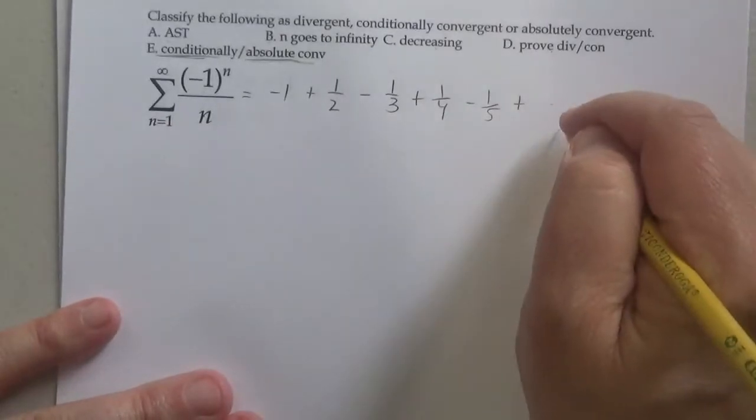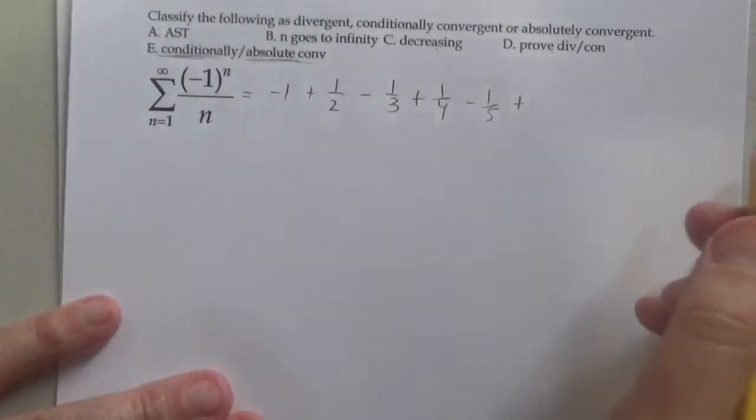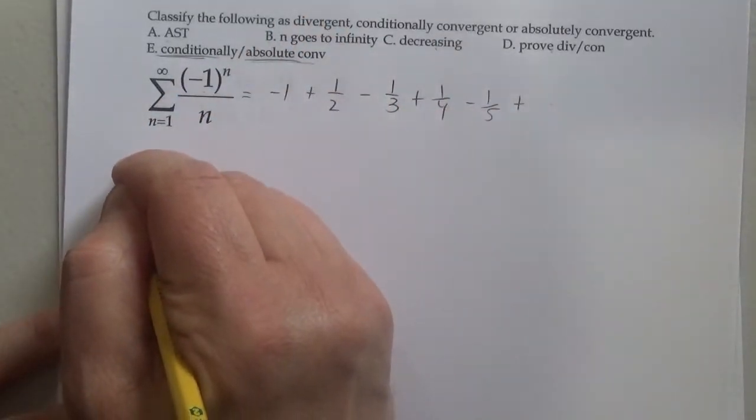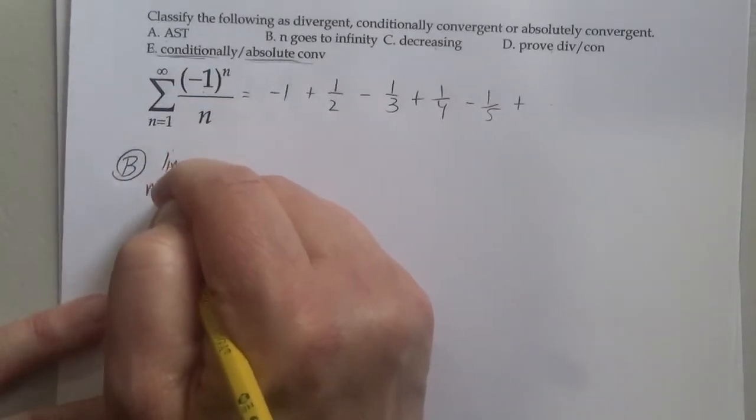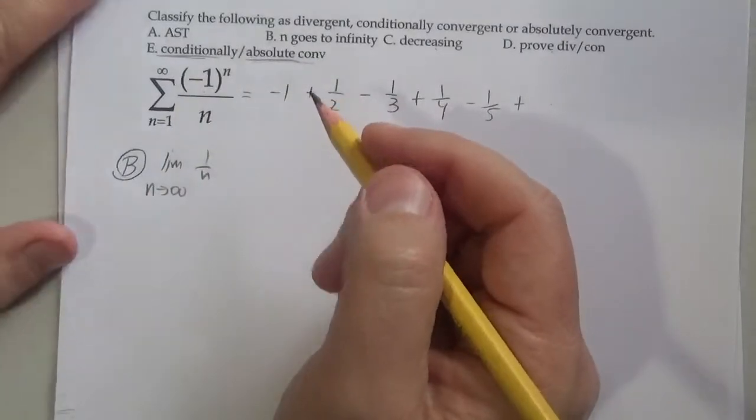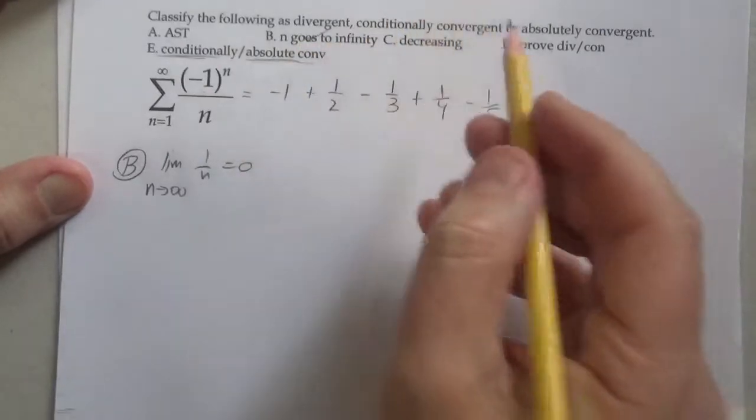So the first thing is to write down alternating series. I'll do that when writing all the conclusions. Letter B says: let's look at the limit as n goes to infinity. I'm going to do the limit as n goes to infinity of 1 over n. Notice I'm excluding the negative 1—I don't need to worry about that. That equals 0, so letter B is a check.